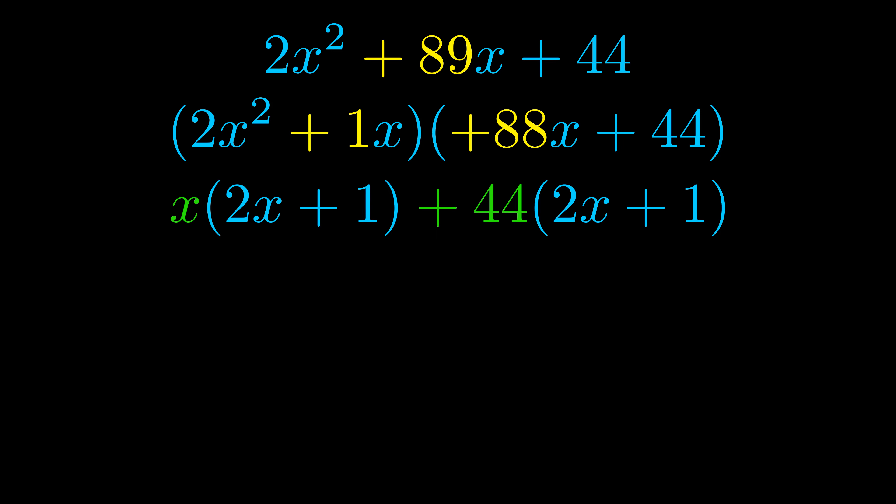Notice also how what remains inside of the parentheses is the same in both cases. The blue values are the same. Those blue values will become one of our factors and we will combine the two green values, the GCFs that we pulled out, to get the other one. And that is our fully factored equation.